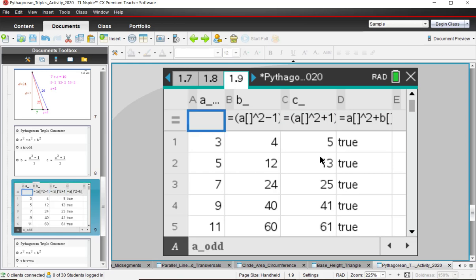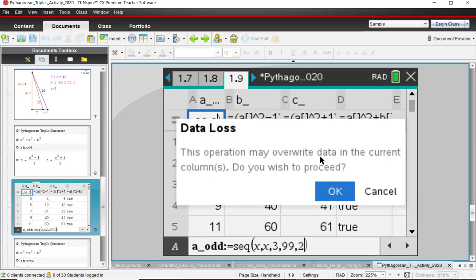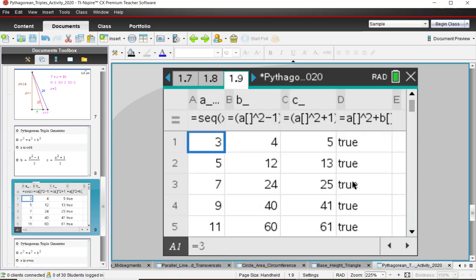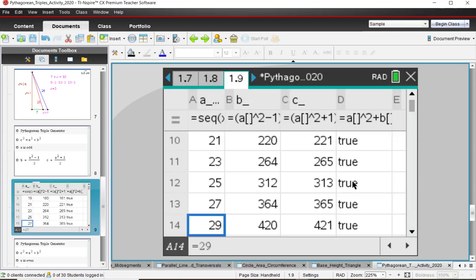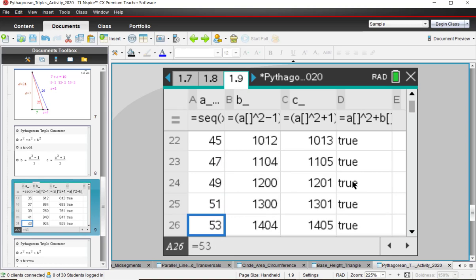And if I wanted to, I can even generate more odd numbers here. So let me type in, I want a sequence of numbers. X comma X comma 3 to, let's say, 99 in steps of 2. And so now it generated a whole bunch of odd numbers, and notice that all of them seem to be true. Press pause as needed.